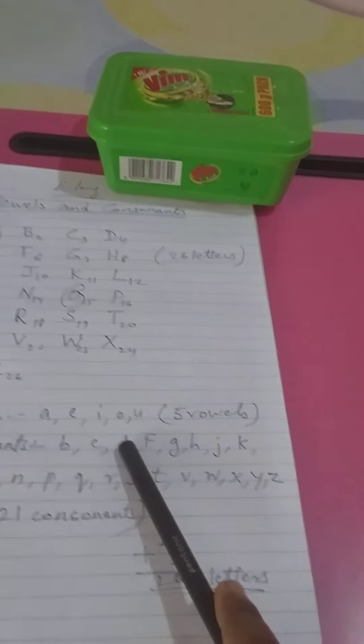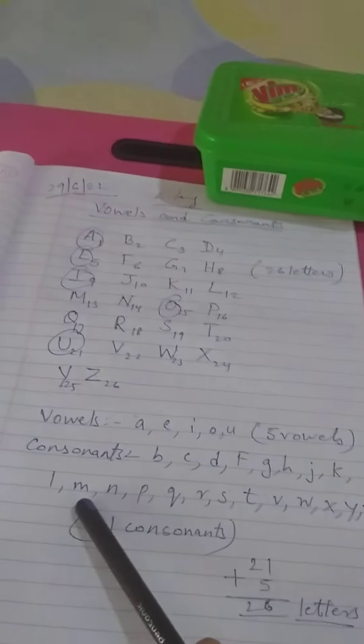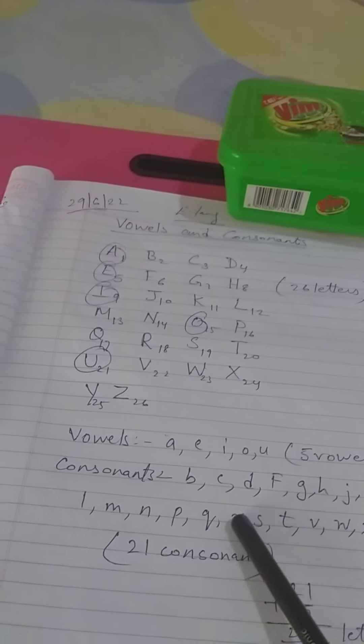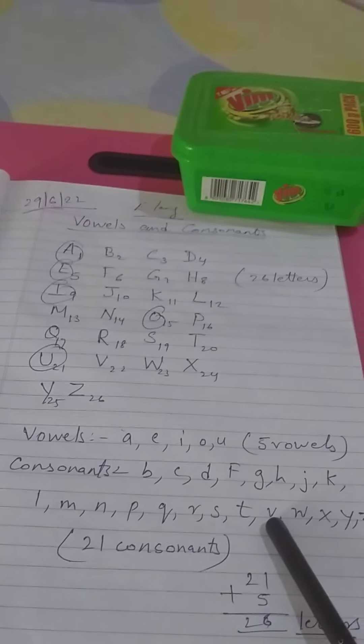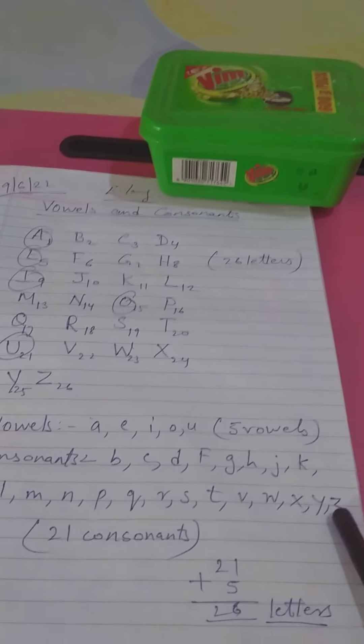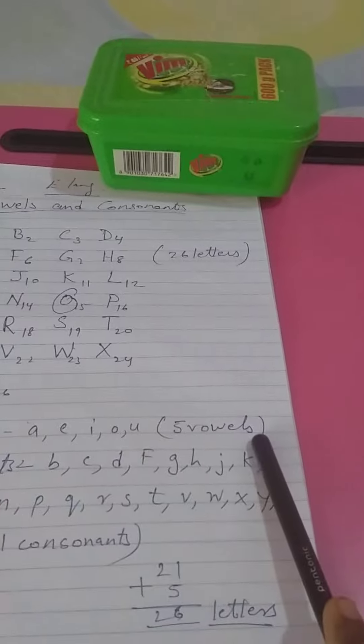How many consonants? 1, 2, 3, 4, 5, 6, 7, 8, 9, 10, 11, 12, 13, 14, 15, 16, 17, 18, 19, 20, and 21. So there are 21 consonants and 5 vowels.